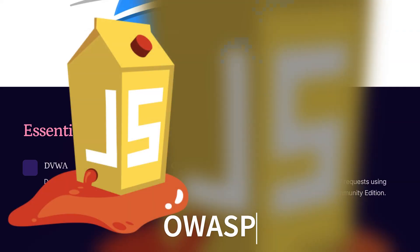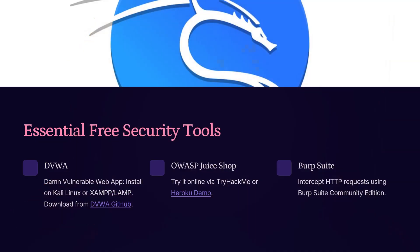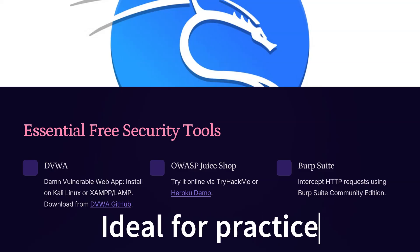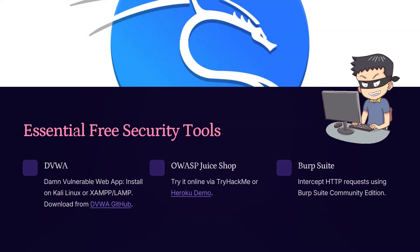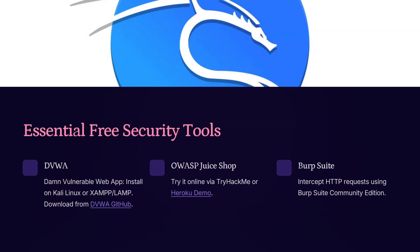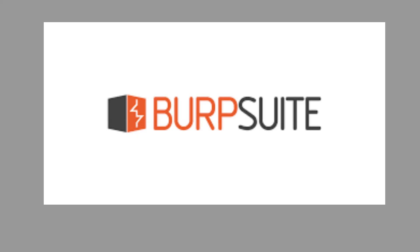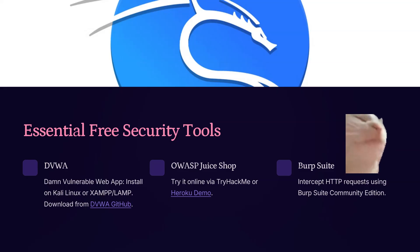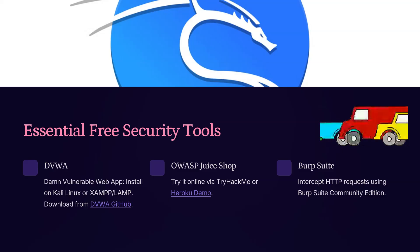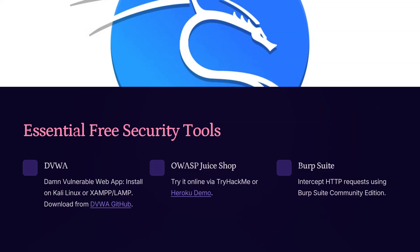Next, we have OWASP Juice Shop. This is a modern and intentionally insecure web app developed by OWASP, and it's ideal for practicing your hacking skills in a legal and controlled environment. The best part is you don't even need to install it. You can try it online through platforms like TryHackMe, or launch it instantly using the Heroku demo link provided on their website.